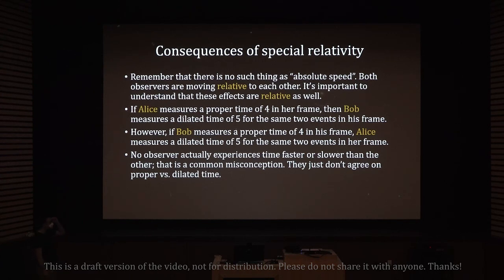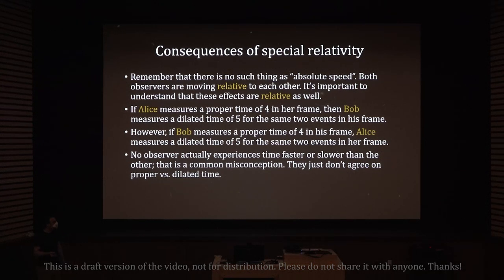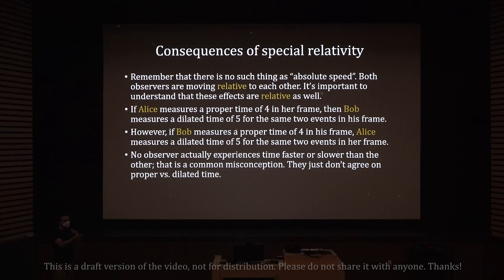There is no such thing as absolute speed. Both observers are moving relative to each other, and these effects are relative as well — that's why it's called relativity. So if Alice measures a proper time of four in her frame, then Bob measures a dilated time of five for the same two events in his frame, and there is a symmetry here. No observer actually experiences time faster or slower than the other — that is a common misconception. They just don't agree on proper versus dilated time.